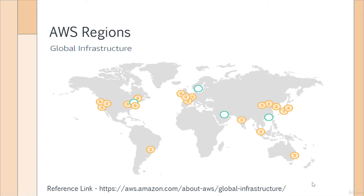I've put up a map on the global infrastructure of AWS — this is the reference link. This map shows you the different locations or the points of presence for Amazon Web Services. In these different locations, AWS has set up their data centers. These data centers have the physical underlying hardware that allows you to host services or resources on the AWS cloud. The ones marked in yellow with numbers are already in place, and as you know AWS keeps on growing — the ones marked in green are the new and upcoming regions.